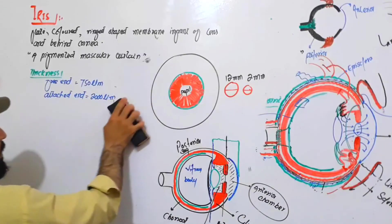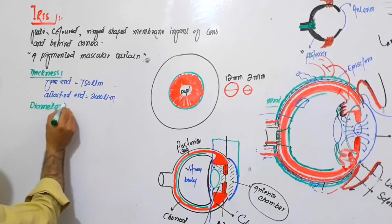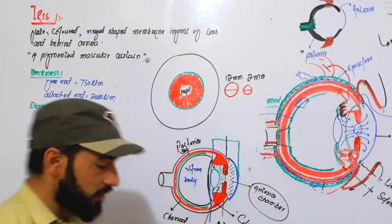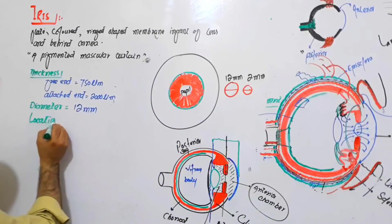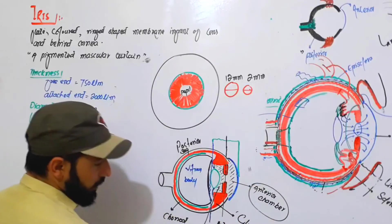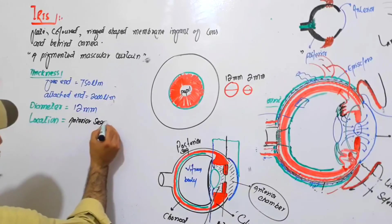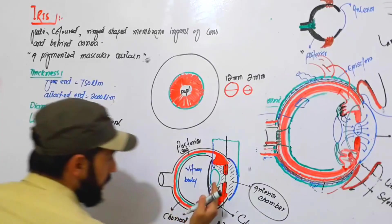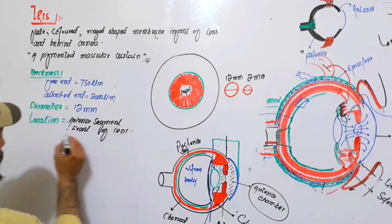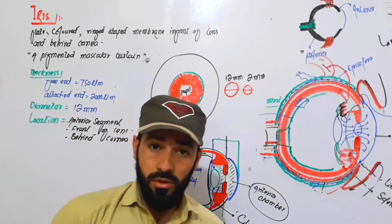The diameter of the iris is about 12 mm. Regarding its exact location: the iris is located in the anterior segment of the eye, in front of the lens and behind the cornea.